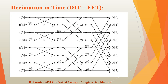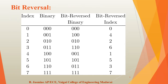Here is how we calculate the bit reversal order. The index goes from 0 to 7. For index 0, the binary representation is 000; for index 3 it is 011; for index 5 it is 101, and so on for all 8 numbers. For bit reversal binary, we reverse the bits. For example, 000 reversed is 000, and 001 reversed is 100. We then convert the reversed binary back to decimal to get the bit reversal index. The resulting bit reversal order for indices 0 to 7 is: 0, 4, 2, 6, 1, 5, 3, 7.